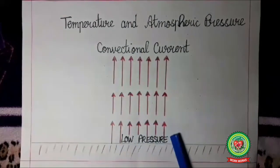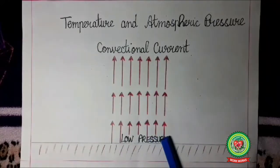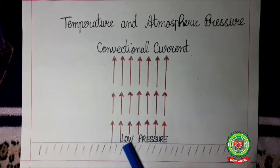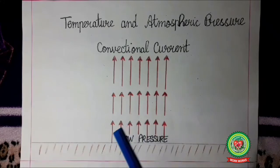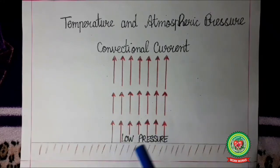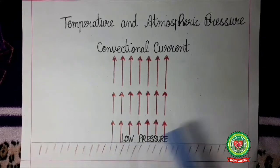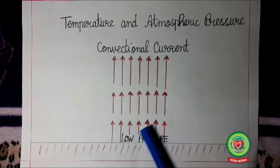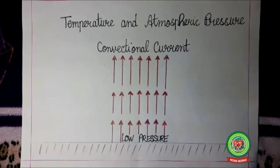When this warm air rises up, the area near the earth's surface has low pressure — a low pressure is created on the earth's surface due to the movement of convection currents from the lower atmosphere to the upper atmosphere.